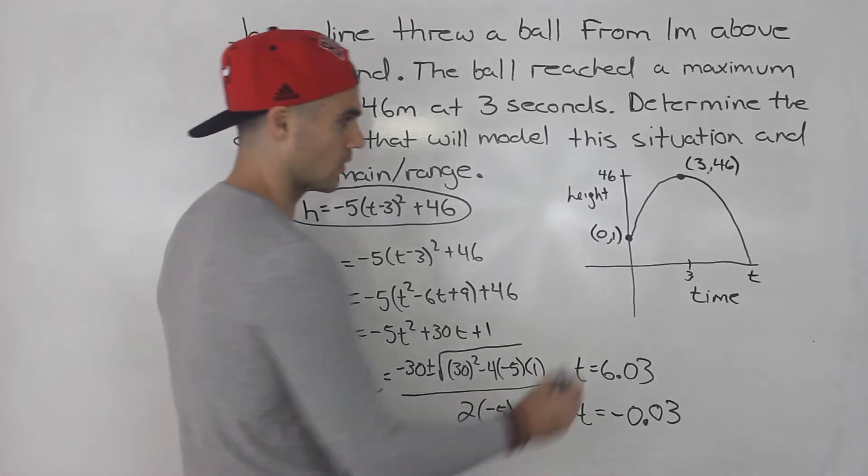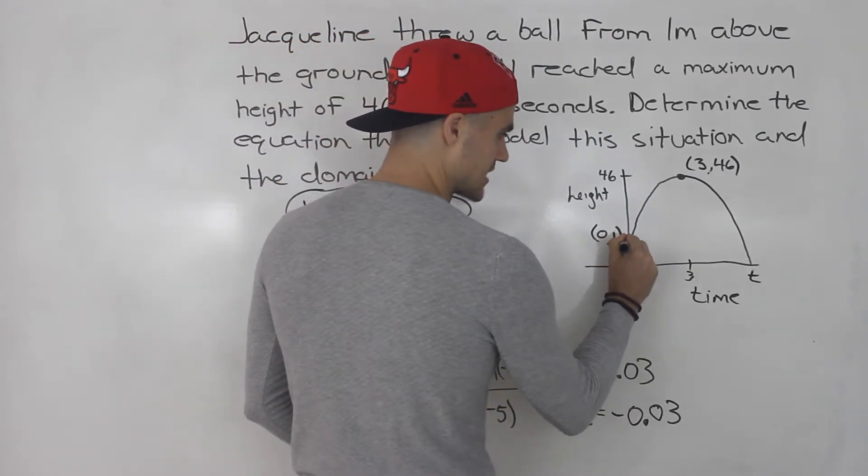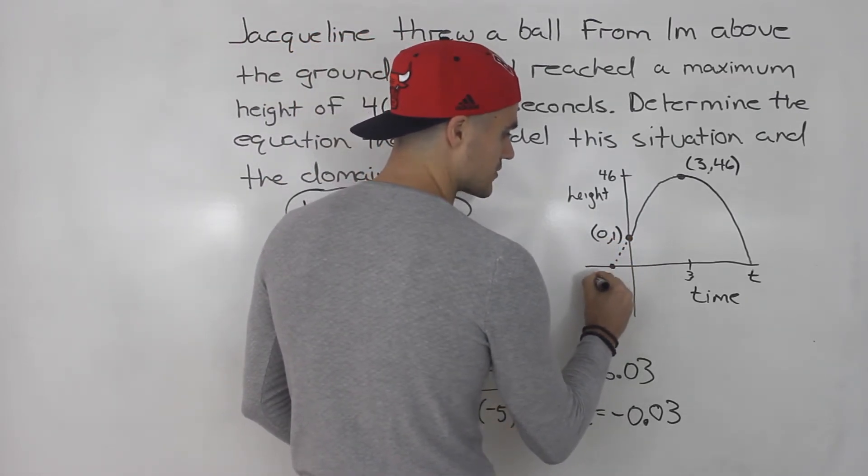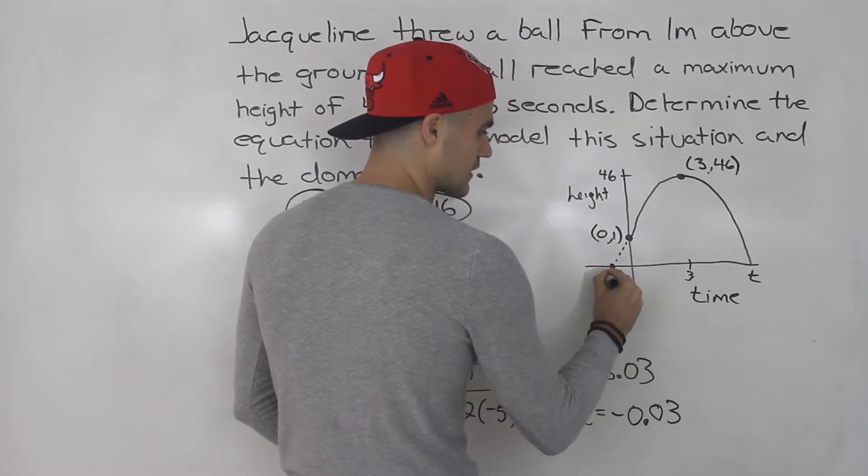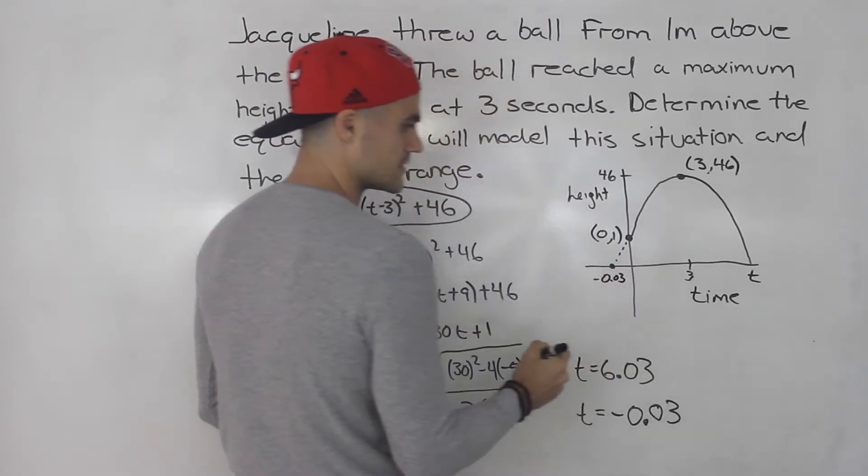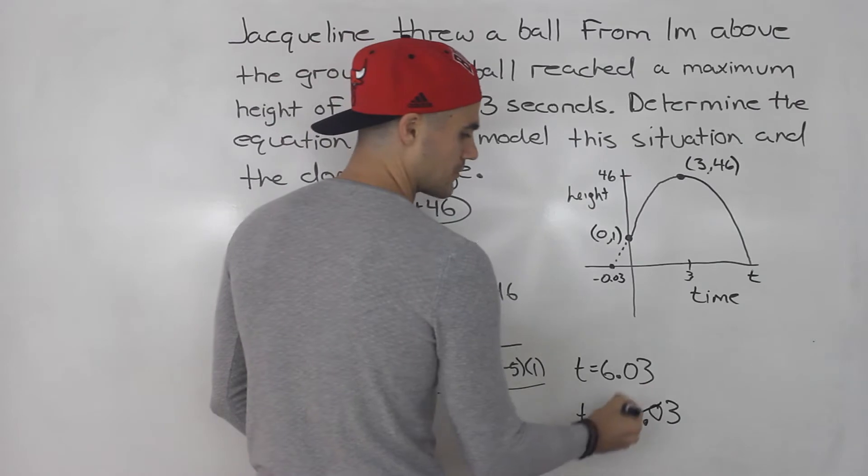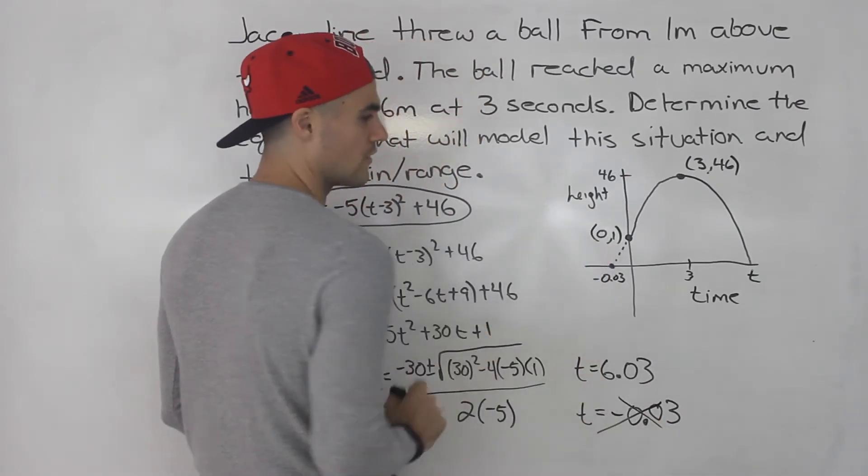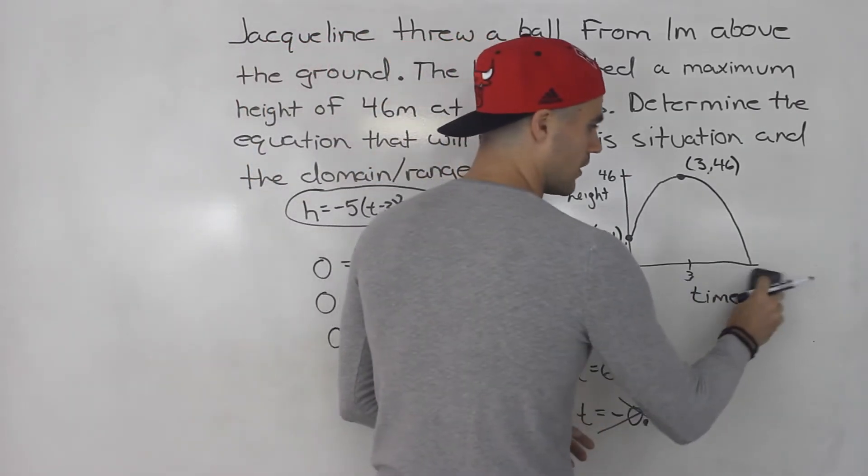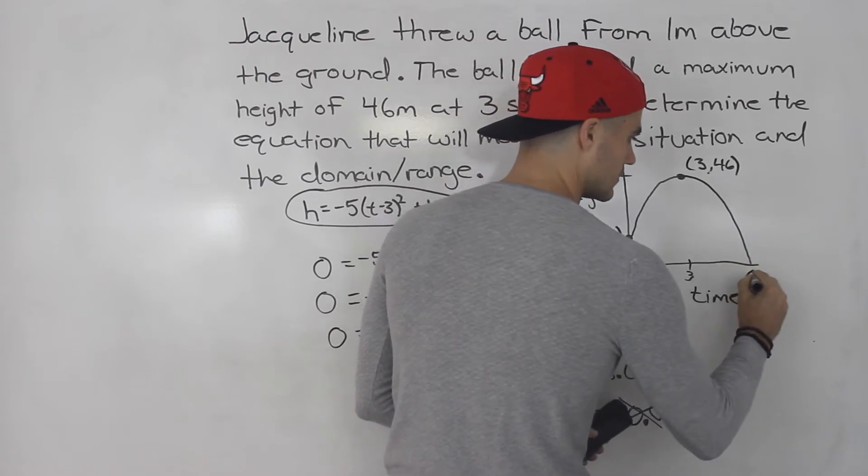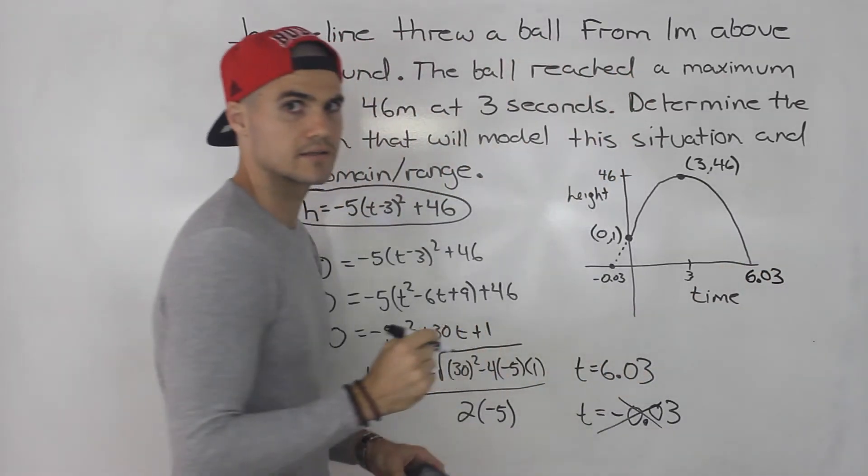So the negative we could ignore. If you look at the parabola this actually extends down to here, so they're saying the other intercept when h is 0 is -0.03. But since we're working with time we know time can't be negative, so we're just going to ignore that portion. So the ball hits the ground at 6.03 seconds.